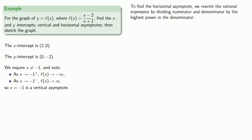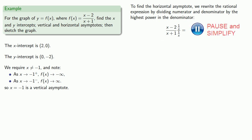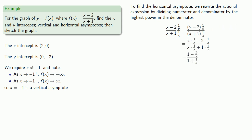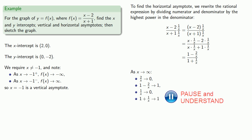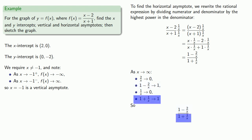To find the horizontal asymptote, we rewrite the rational expression by dividing the numerator and denominator by the highest power in the denominator, which is x. So we multiply numerator and denominator by 1 over x and do a little algebra. As x goes to positive infinity, 2 over x goes to 0, which means 1 minus 2 over x goes to 1. Also, 1 over x goes to 0, so 1 plus 1 over x goes to 1. So in our rational expression, the numerator goes to 1, the denominator goes to 1, and the rational expression goes to 1 over 1, which is 1. As x goes to infinity, f of x goes to 1.